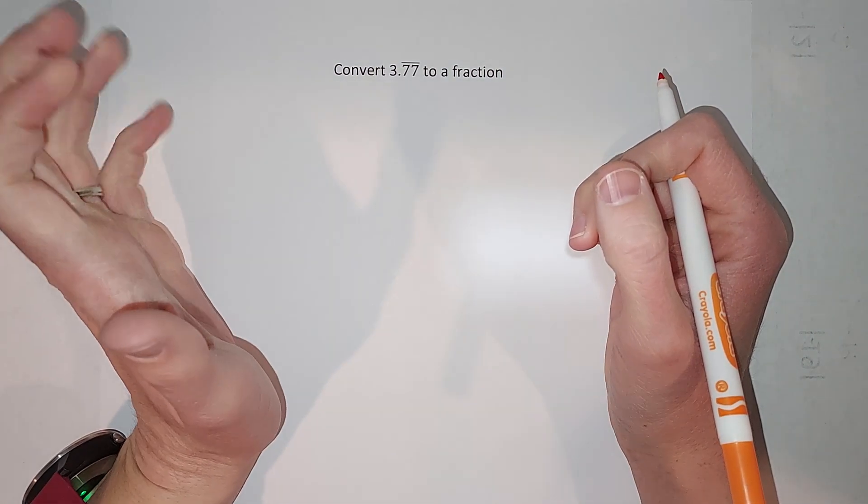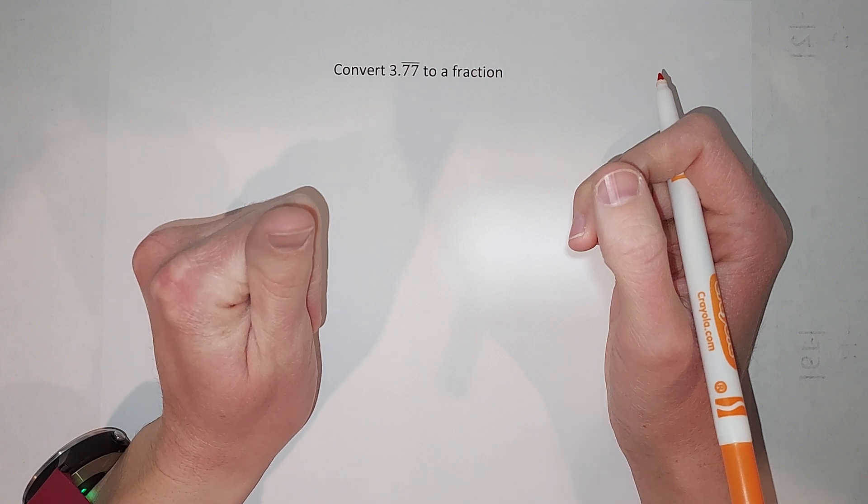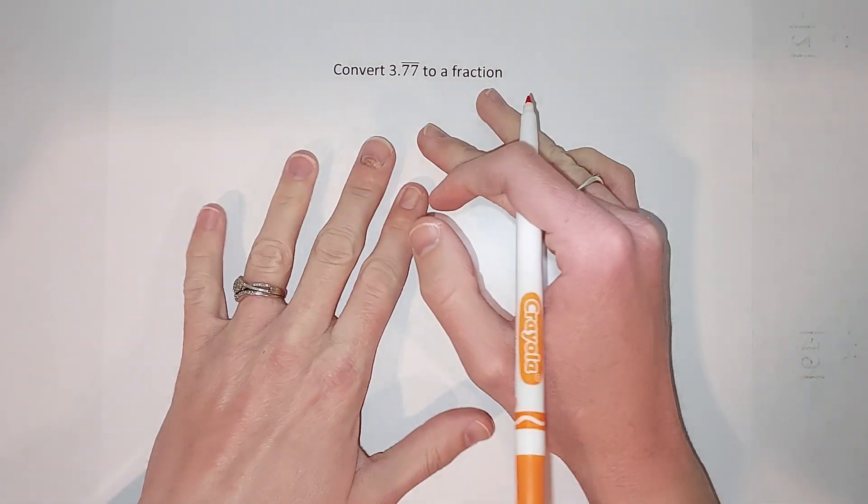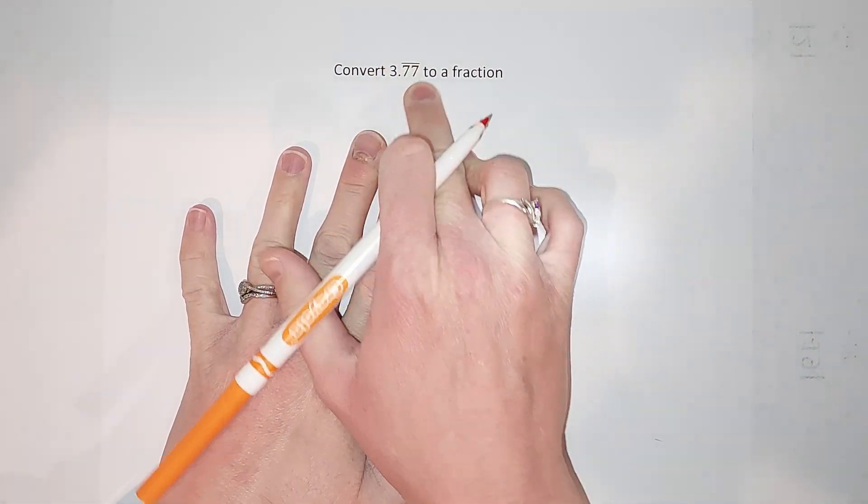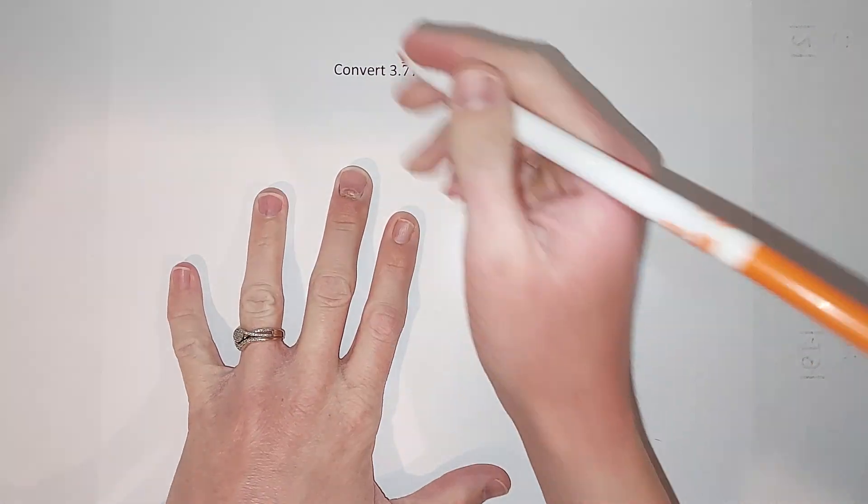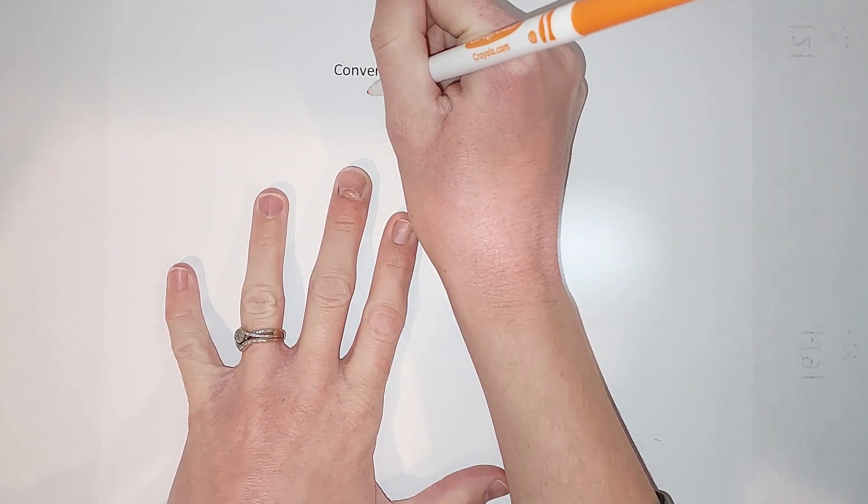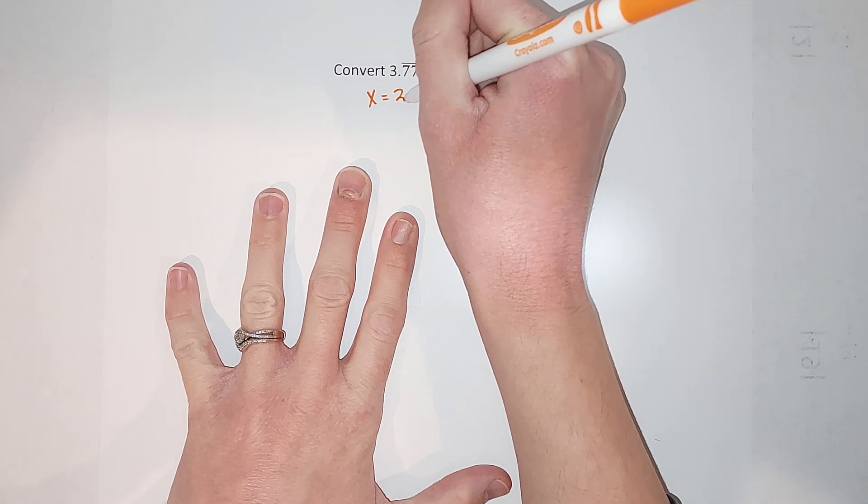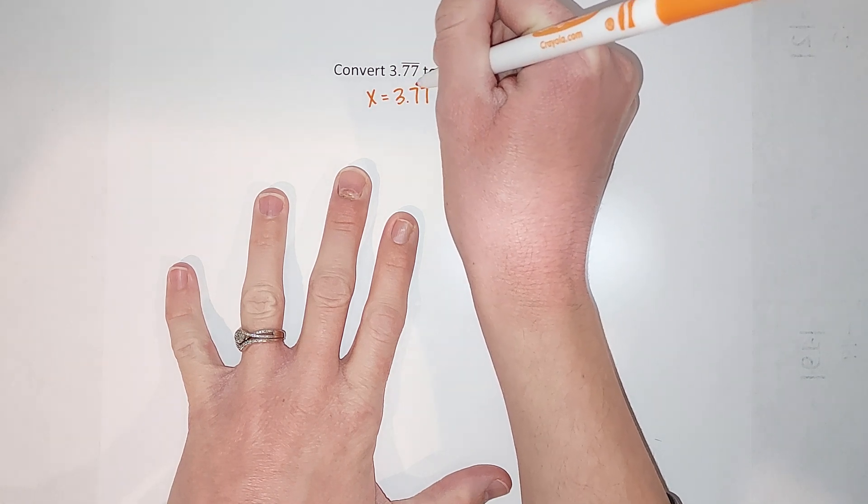But there is still a way somebody very smart figured out to do it and it's not too tricky. How we start out first is we set our number here equal to a variable, so x equals 3.77 repeating.